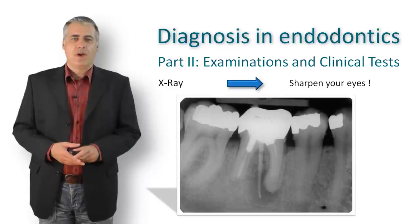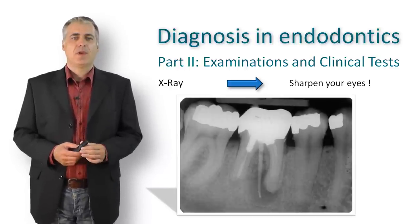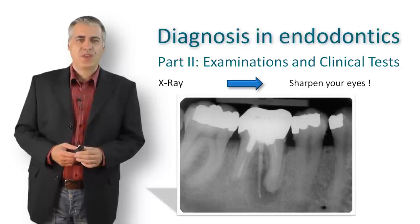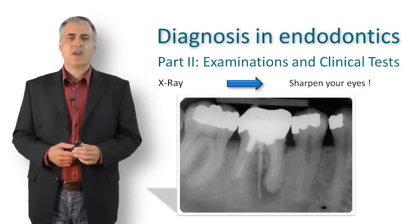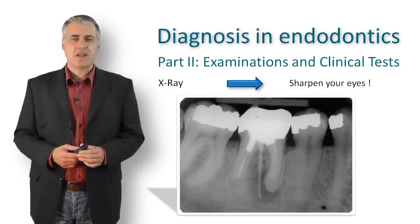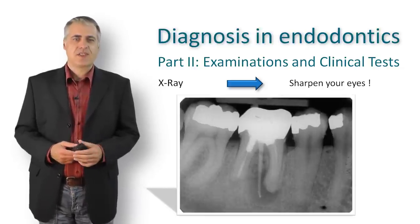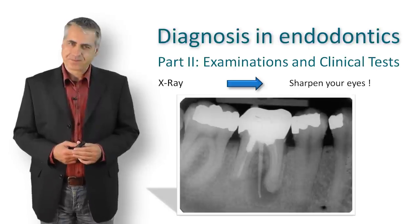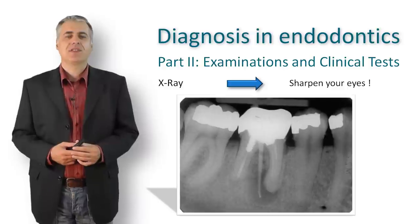As mentioned before, if an intra-oral sinus tract is present, it is possible to follow it to its origin. With a gutta-percha cone inserted into the visible entrance until some resistance, you can make a radiograph. In this case, the cone points to the mesial root of a lower first molar. You can also see that the distal root is much shorter in length, though the dental history tells nothing about a prior surgical treatment.